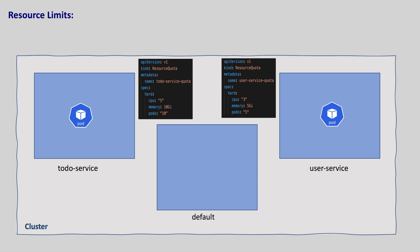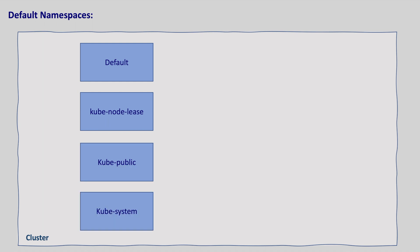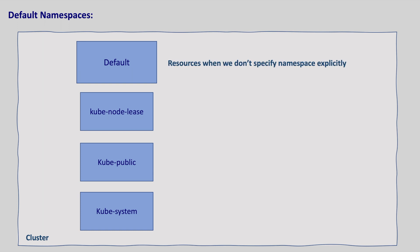When we create a Kubernetes cluster we get four default namespaces: default, kube-node-lease, kube-public, and kube-system. Let's look at these namespaces one by one. By default, all the resources created in the Kubernetes cluster are created in the default namespace if you don't specify explicitly.